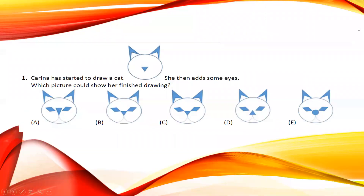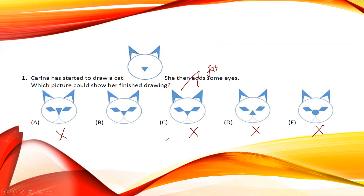The question says Carina has started to draw a cat. Looking at the figure, the nose would be a circle, not a triangle, so cancel that option. It goes to a vertex, so cancel that. It goes too big, so cancel B and C. In C the ears appear to be fat, so cancel that. Our answer is B.